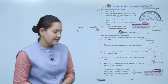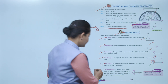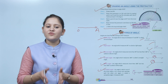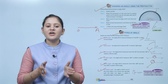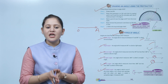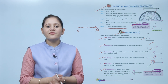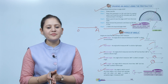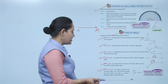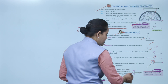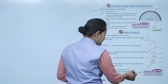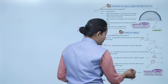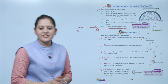A complete angle is one in which one arm takes a full round and overlaps with the other arm again. It measures 360 degrees — the angle around a point is 360 degrees. This is a complete angle of 360 degrees.